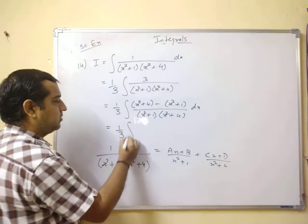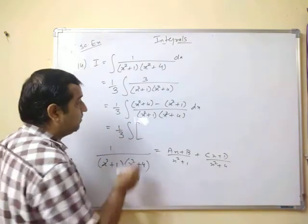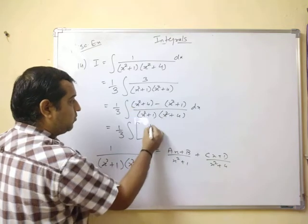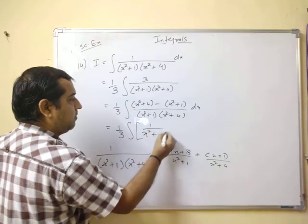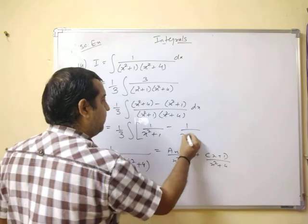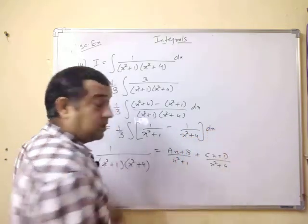Separate the terms. In the first term, x square plus 4, x square plus 4 get cancelled, you get 1 upon x square plus 1 minus you get 1 upon x square plus 4 dx.